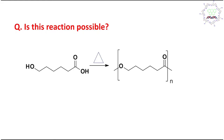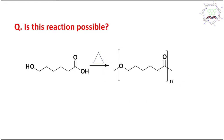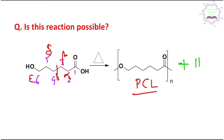Our topic today is PCL or polycaprolactone. The question is whether this reaction is possible: 1,2,3,4,5,6-hydroxyhexanoic acid, also called caproic acid or epsilon-hydroxy acid. This reaction is possible and produces the polymer named PCL or polycaprolactone. However, it produces a stoichiometric amount of water as a byproduct.